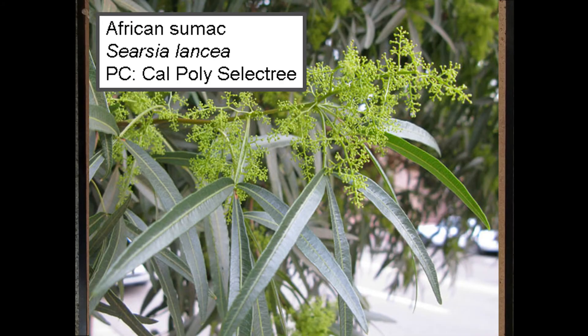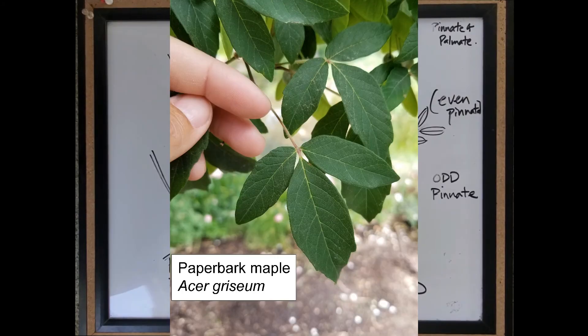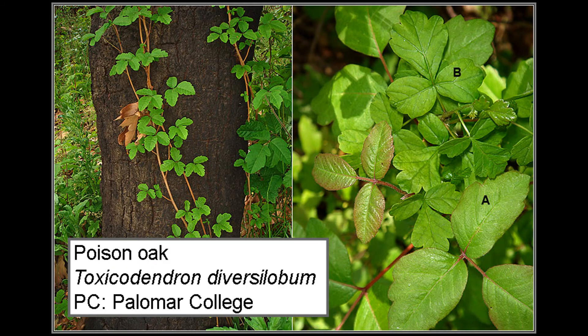An example of this would be African sumac, box elder, paperbark maple, and poison oak, some of the other poison plants.